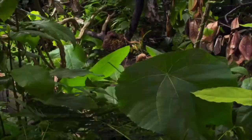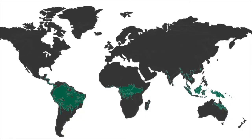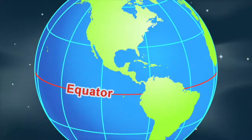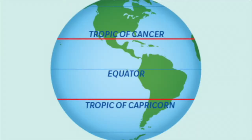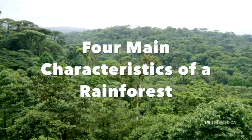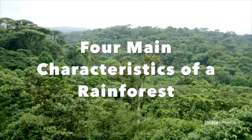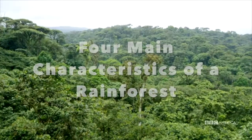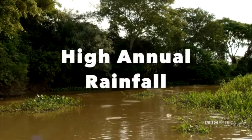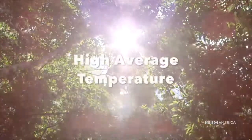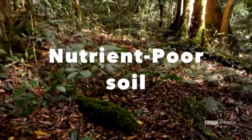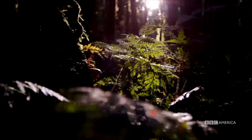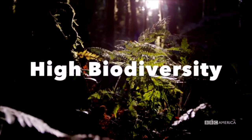Rainforests encompass 6% of the world's land area and are found near the equator between the Tropic of Cancer and the Tropic of Capricorn. They have four main characteristics: very high annual rainfall, high average temperatures, nutrient-poor soil, and high levels of biodiversity.